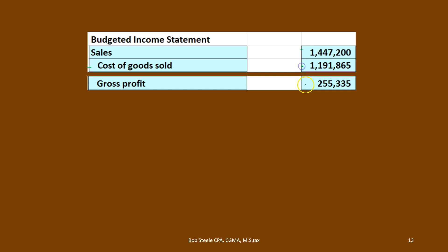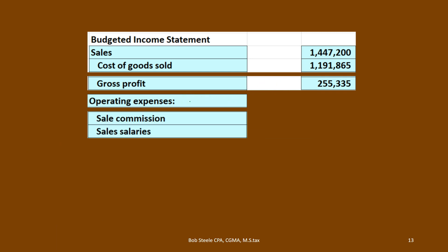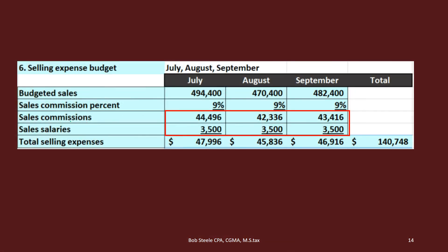From there we calculate gross profit — that's sales minus cost of goods sold, which gives us the gross profit as normal. Then we have the operating expenses. Within operating expenses we have the sales commission and sales salary, and we're going to pick those numbers up by jumping back to the selling expense budget — so we have those two items. They weren't totaled in that budget, so we have to add them up.